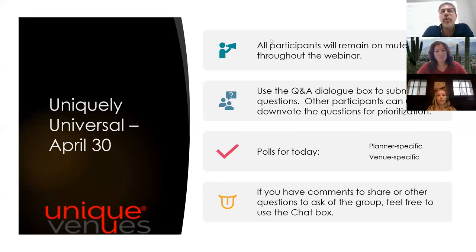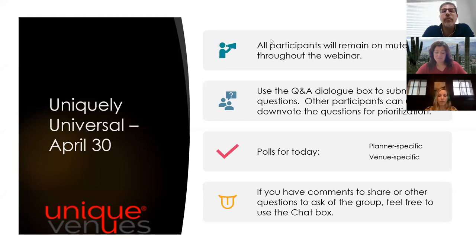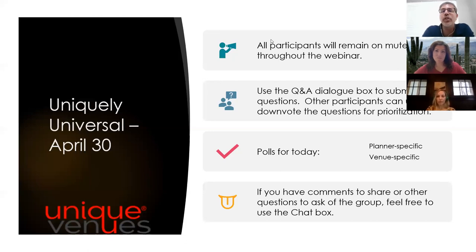As a reminder, everyone will remain on mute throughout the webinar. While you can't ask questions verbally, you can do so using the Q&A dialogue box. Look at your Zoom dashboard and open the Q&A button to ask a question of Amanda, our presenter today, about the topic of universal design. Other participants can see those questions and upvote or downvote them so we can prioritize them, and I will help feed them to Amanda during breaks in her presentation.